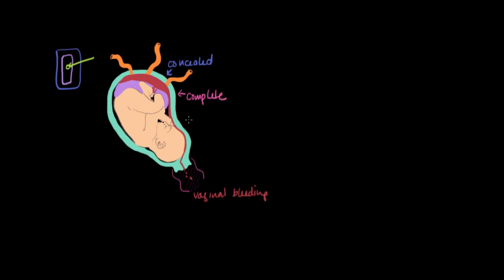Getting back to some of the symptoms of abruption, the first is vaginal bleeding. Vaginal bleeding that occurs late in the course of the pregnancy, specifically after the 20-week mark, and that's referred to as antepartum bleeding.